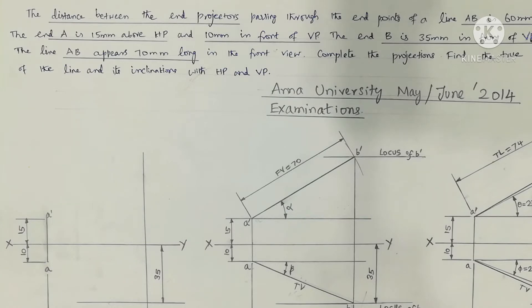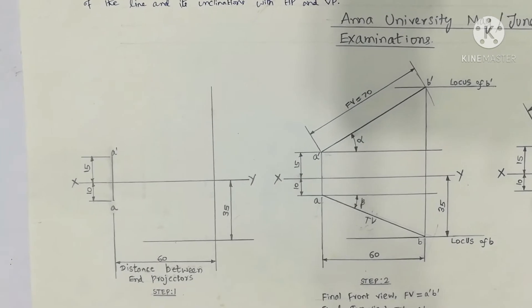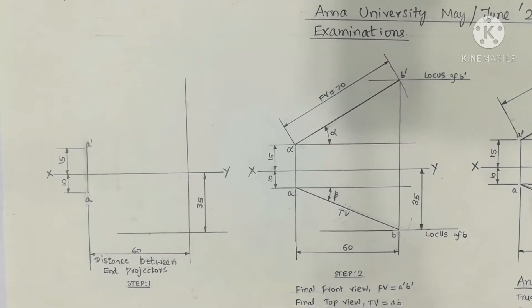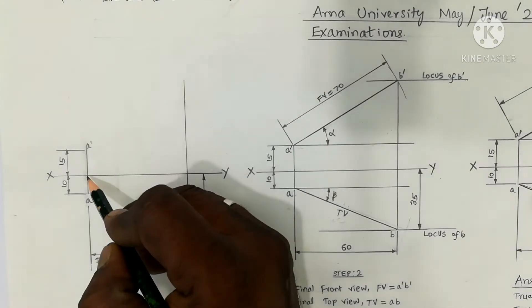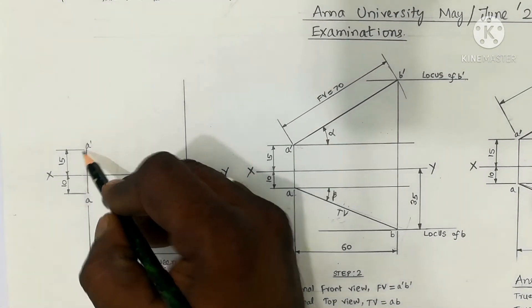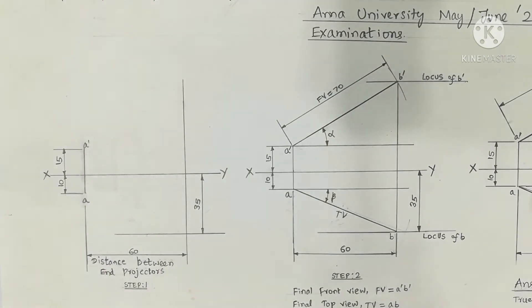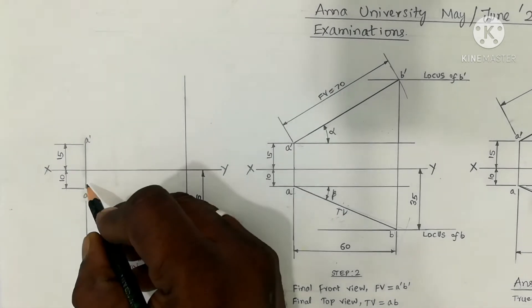One end point A is 15mm above HP. Since it is above HP, the distance will come above the XY line. In front of VP, the distance is 10mm. So end point A is marked at the XY line accordingly.